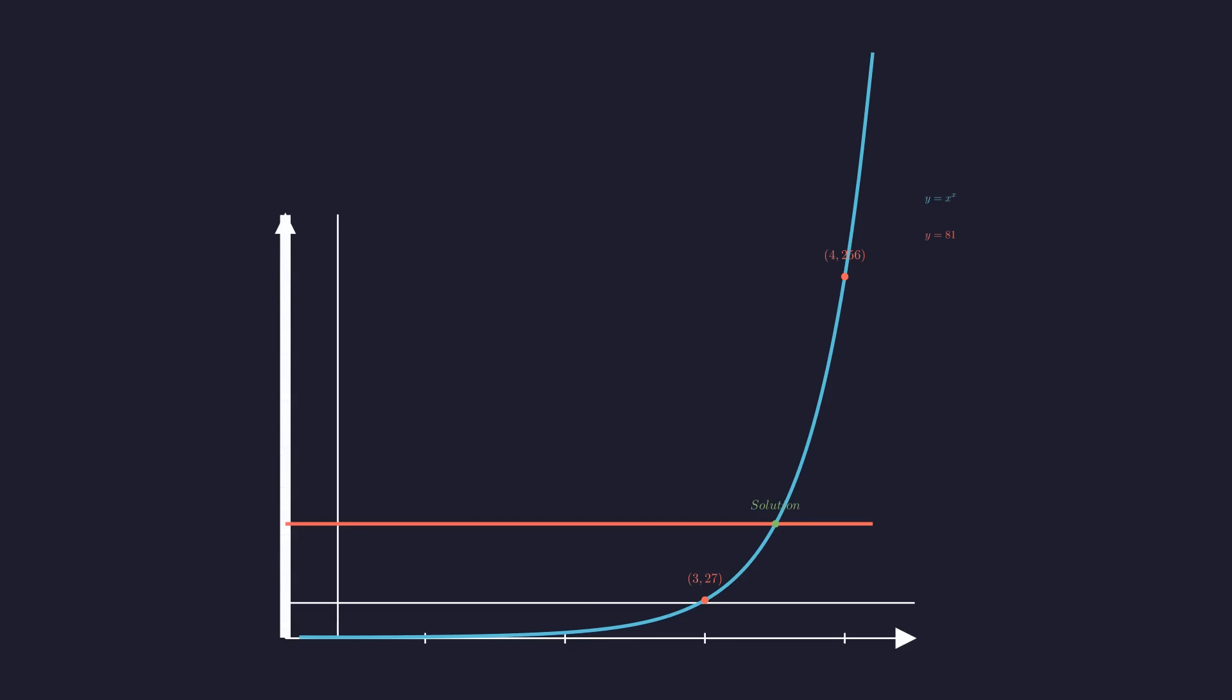The graphs intersect at exactly one point. As predicted by our analysis, the x value of this intersection lies between 3 and 4. This confirms a single real solution exists.